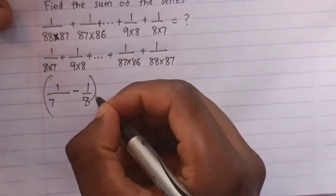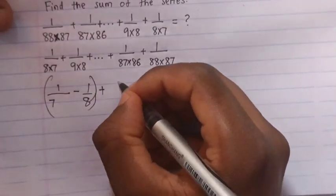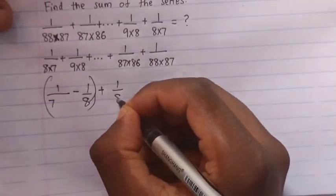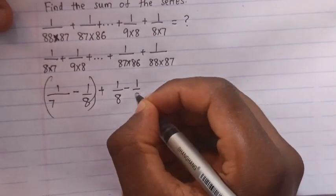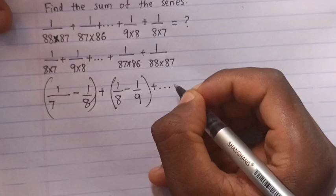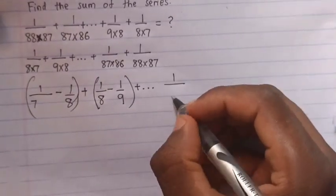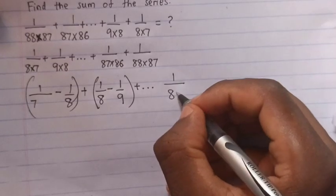Bracket, plus 1 over 8 minus 1 over 9, bracket, plus, go like this. It is 1 over 86 minus 1 over 87.